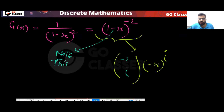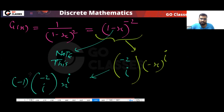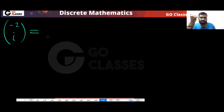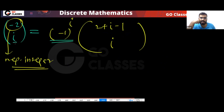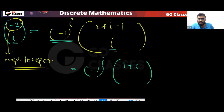So what will be the answer? The x^i coefficient will be minus two C i multiplied by minus one power i. You can directly apply the negative integer formula. It will become (i+2-1) C i, times minus one power i — don't forget about the minus one power i. So that gives you (i+1) C i times minus one power i, which is one plus i times minus one power i.